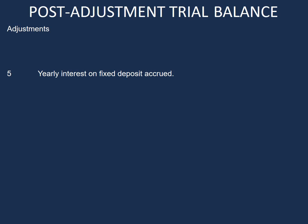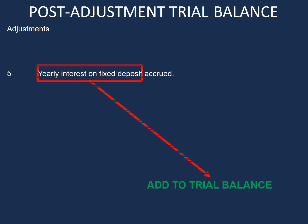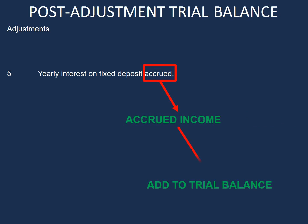The next adjustment is yearly interest on fixed deposit accrued. The two accounts we have are interest on fixed deposit, which is not on our list of accounts, so we need to add that to our trial balance. And accrued income, which is also not in our list of accounts, so we will need to add that account to our trial balance as well. For this adjustment, we will not do any highlighting in our list of accounts.